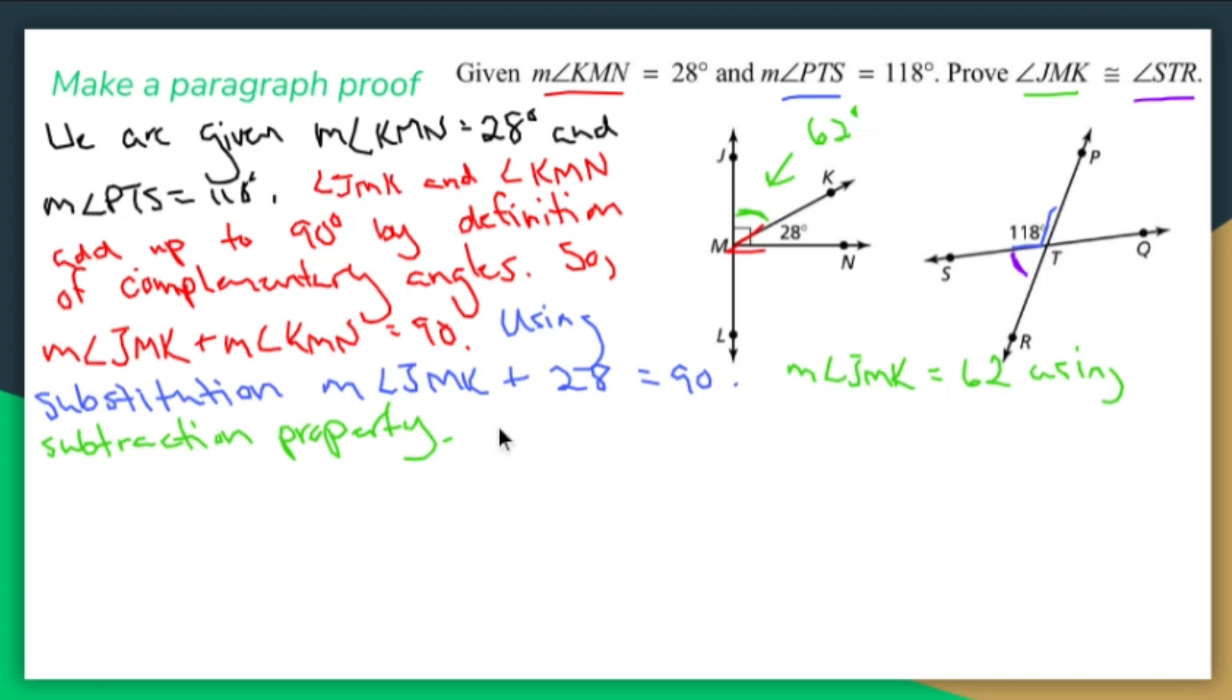Now I found out what the measure of angle JMK is. Why don't I say that the measure of, now what I'm going to do is I'm going to avoid writing so much here and just kind of jump right to that and say that the measure of angle STP plus the measure of angle PTS equals 180 by definition of supplementary angles.